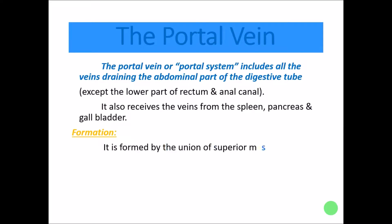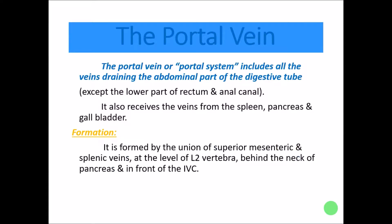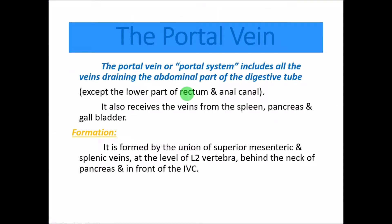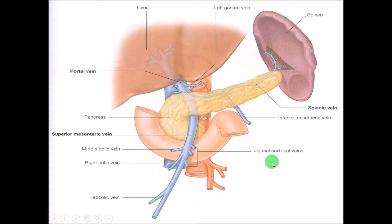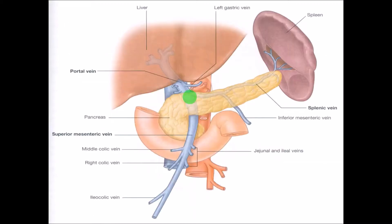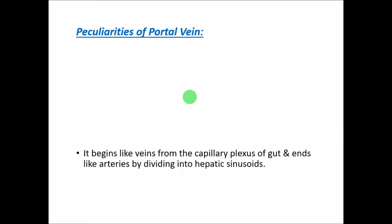The portal vein is formed by the joining of two important veins: the superior mesenteric vein joining with the splenic vein, just in front of the inferior vena cava at the level of L2 vertebra and behind the neck of the pancreas. So just behind the neck of the pancreas is where the portal vein is formed.